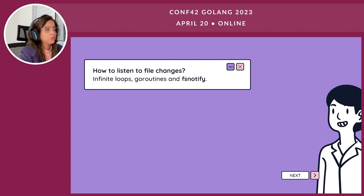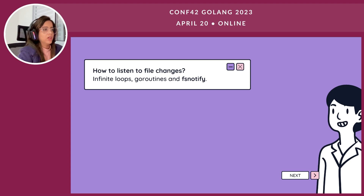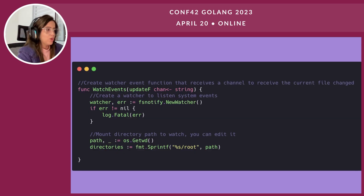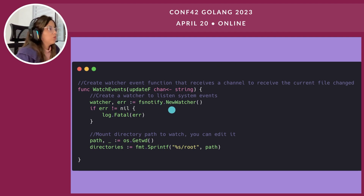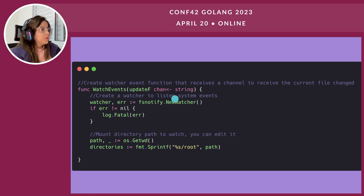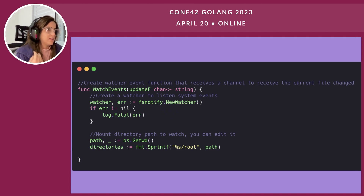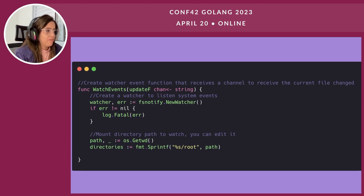To listen for file changes, I worked with infinite loops, goroutines, and the fsnotify package. The fsnotify package is responsible for listening to operating system event notifications. I'll show you how I created the watch event function: we use the fsnotify package to create a watcher, receiving a channel as a parameter. We iterate over this channel. The watcher returns a struct with some methods and event structs we can operate on. Then I formatted a string for the path I want to watch.